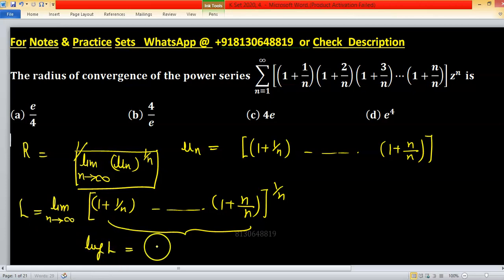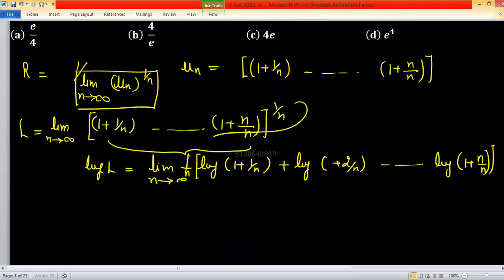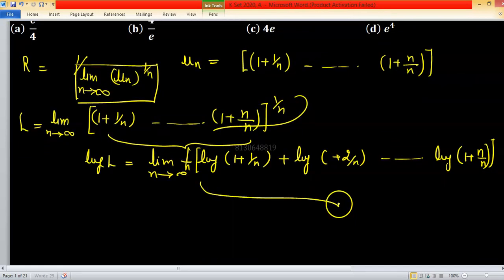So log L equals to limit n tending to infinity log 1 plus 1 upon n. Or you can take 1 upon n, this one outside, 1 upon n finally and plus log 1 plus 2 upon n and so on log 1 plus n upon n. And finally, we have this one because this is finite sum.